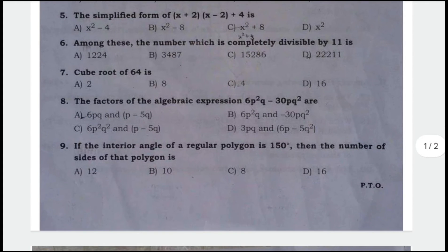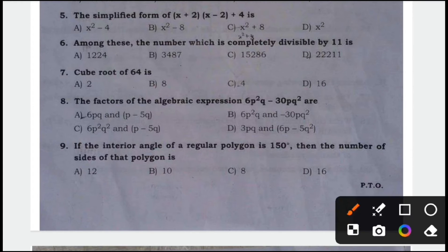Next, question number 9. If the interior angle of a regular polygon is 150 degrees, then the number of sides of that polygon is option A, 12 is the correct answer. Next question.